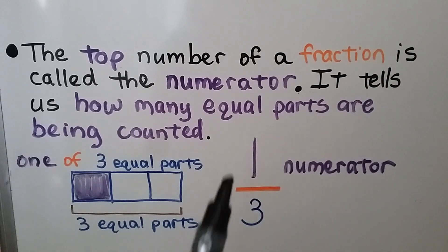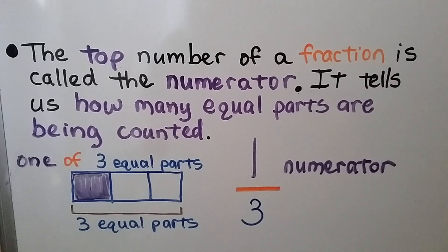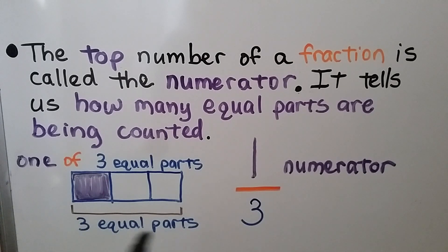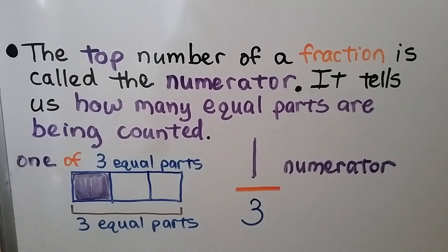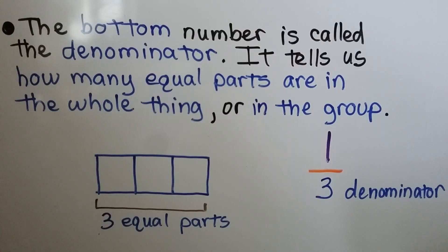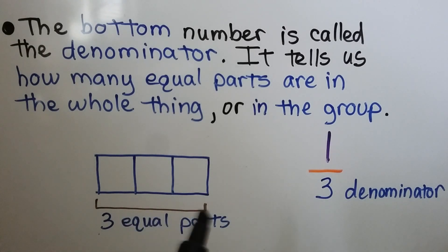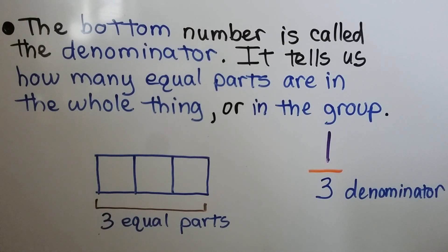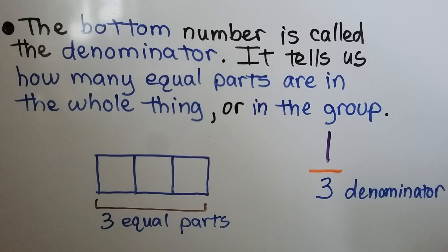The top number of a fraction is called the numerator. It tells us how many equal parts are being counted. We have three equal parts, and it's telling us one of the three equal parts is being counted. The bottom number is called the denominator. It tells us how many equal parts are in the whole thing, or in the group. So we know there are three equal parts, and that numerator — the top number — tells us it's one of three equal parts. It's one-third.